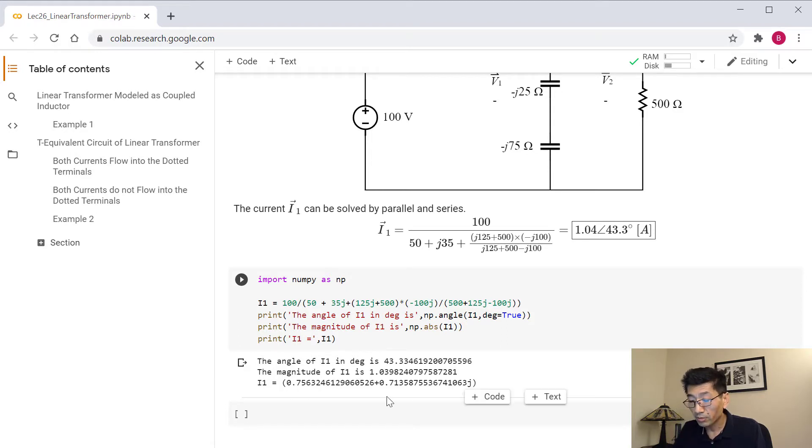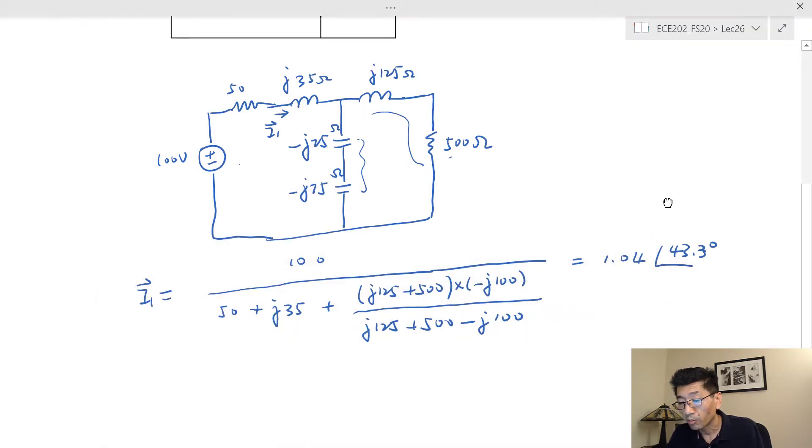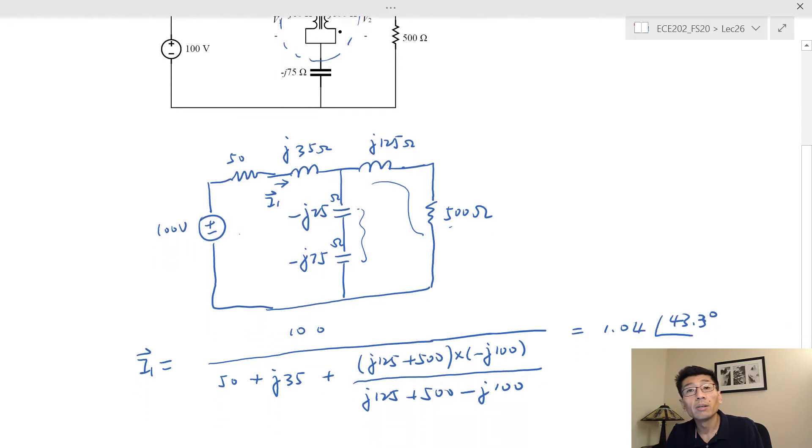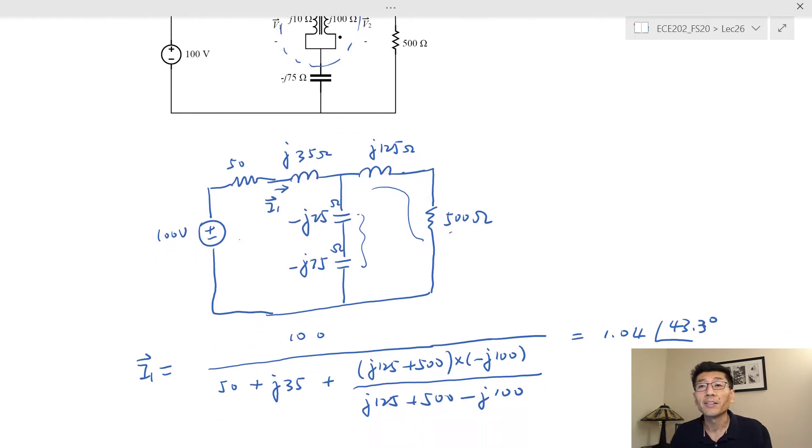You see, this equivalent circuit can sometimes really simplify things. We can get the result in one step rather than solving four simultaneous equations. That's pretty cool. We didn't really do much for the equivalent circuit - we just did a little trick, then we draw the equivalent circuit, and that equivalent circuit can be quite useful.